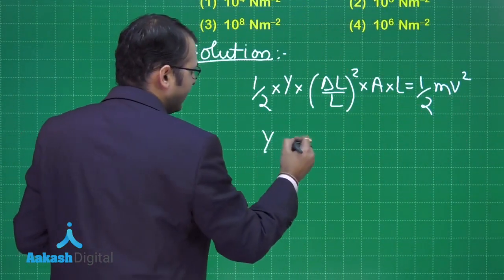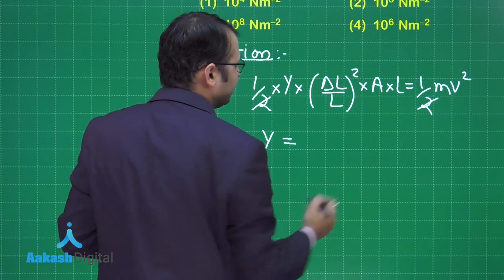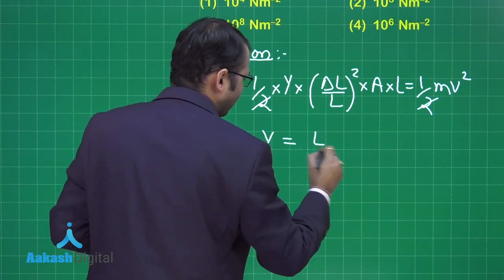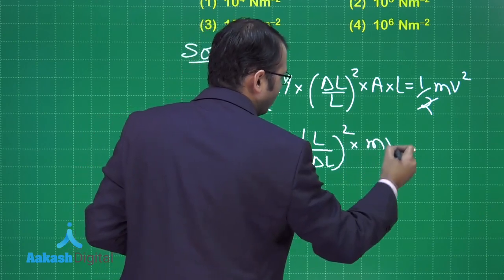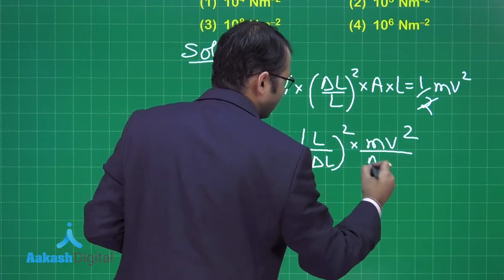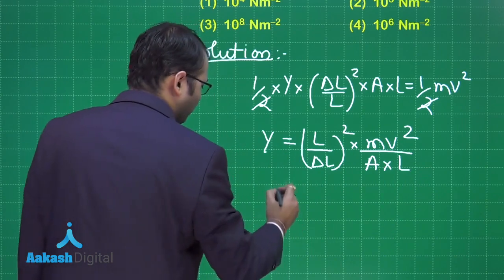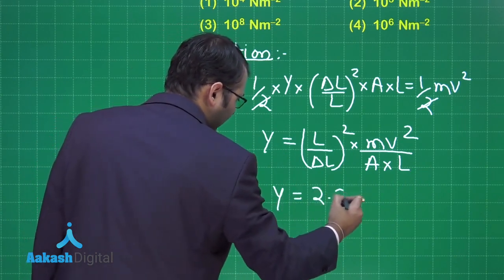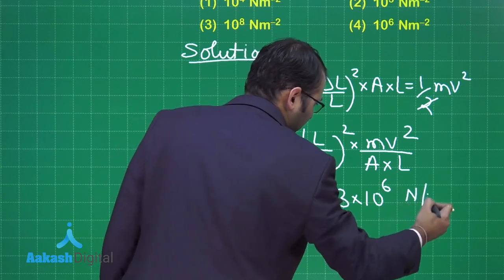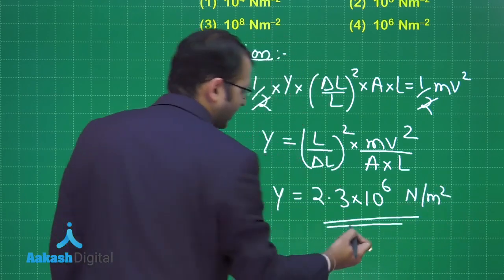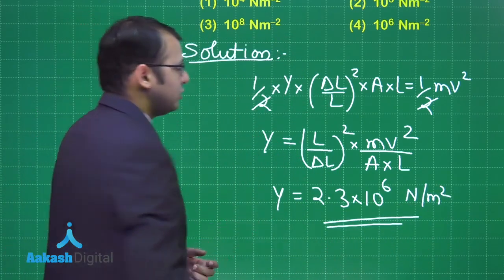Y can be simplified - this and this will be cancelled, you will get L by delta L whole square into m v square divided by area into L. If you put the values you will get Y as 2.3 into 10 to power 6 newton per meter square. So order of Y or the Young's modulus would be simply option number 4.